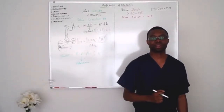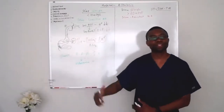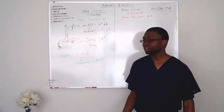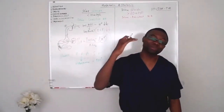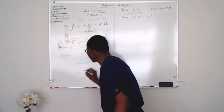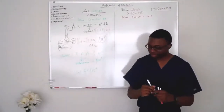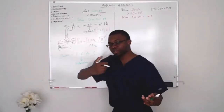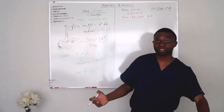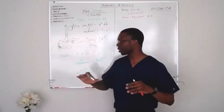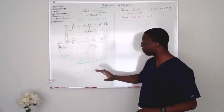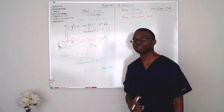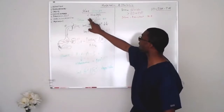Aldosterone goes into the distal convoluted tubule. It increases sodium reabsorption back into the body. But the problem is it doesn't care about potassium, so you're going to be losing potassium. So you're going to lose hydrogen ions and potassium. Aldosterone reabsorbs sodium and loses potassium. And because you vomited all your chloride, your urine chloride is going to be low.